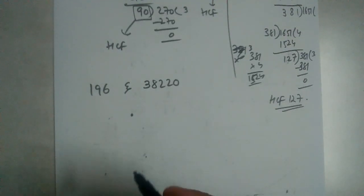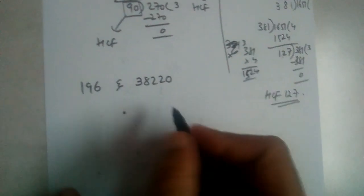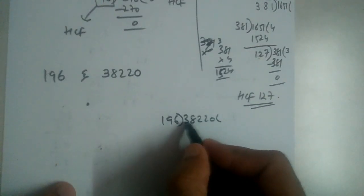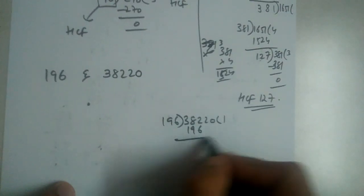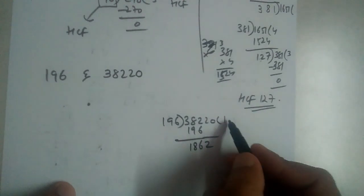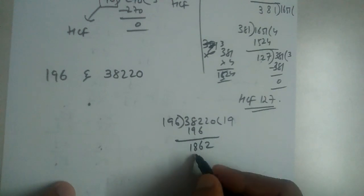Now we have 196 and 38220. All right, so if we divide 38220 by 196, 196 once will be 196. Then we have 1, 2, 6, and then 8 and 1, 2. Again, 9 times 196 is 1764.